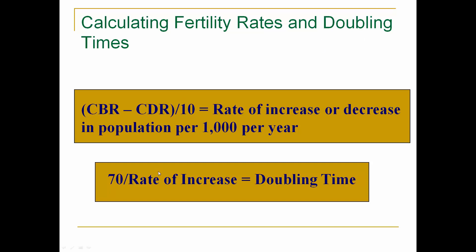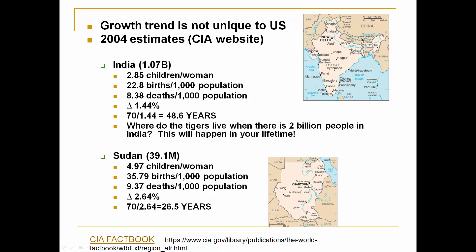This is important to remember: crude birth rate minus crude death rate divided by 10 gives you the rate of increase. Then you divide 70 by the rate of increase and that gives you the doubling time. India at 2004 is 1.7 billion. Most women are having about three kids — births are way more than deaths. Population growth rate is 1.44%, so it will double in about 48 to 50 years. Where's a tiger going to live in 50 years if India goes from 1.04 to 2 billion? You students are going to live for 50 more years — I'm not.